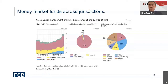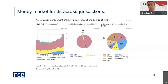There are some differences: in the US, government MMFs — which invest in sovereign and other government securities and repos backed by them — account for most assets under management. In other jurisdictions, non-government funds are more prevalent. Money market funds are usually denominated in local currency, but in Europe, dollar-denominated funds account for around one third of total AUM, underscoring their importance as a dollar funding vehicle for the banking sector.